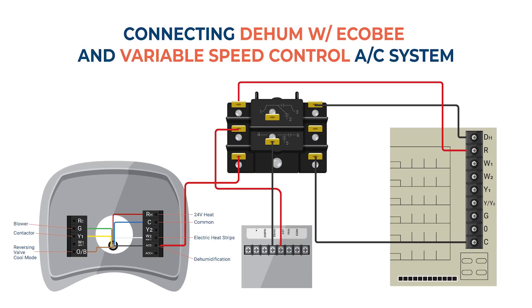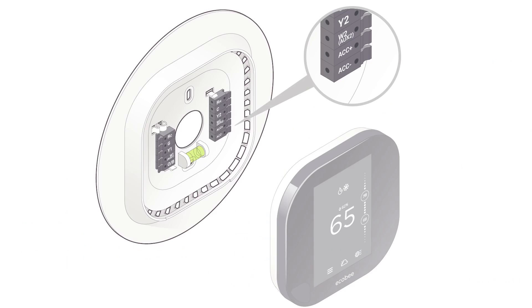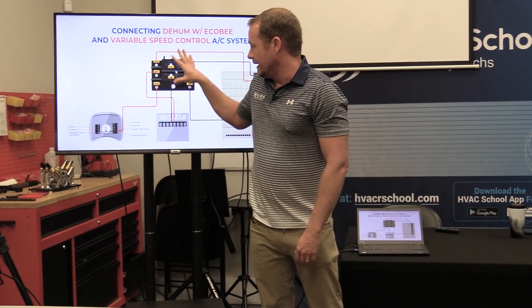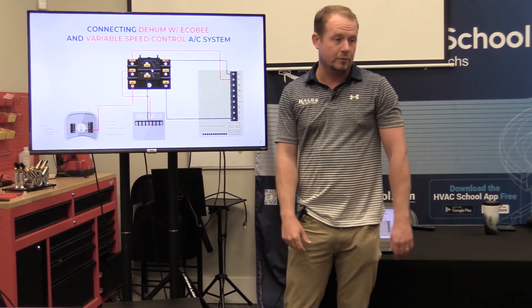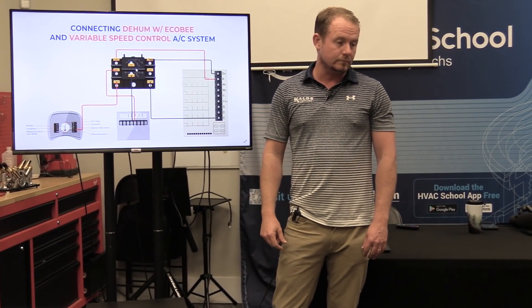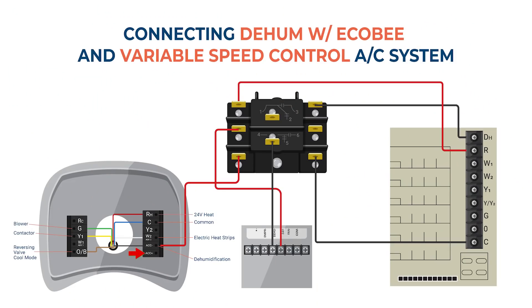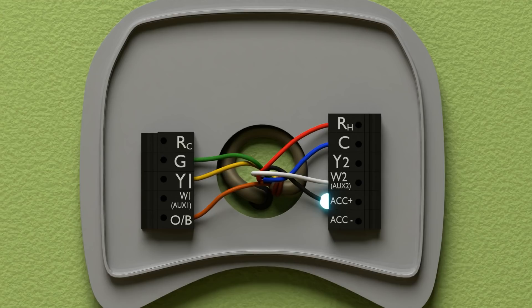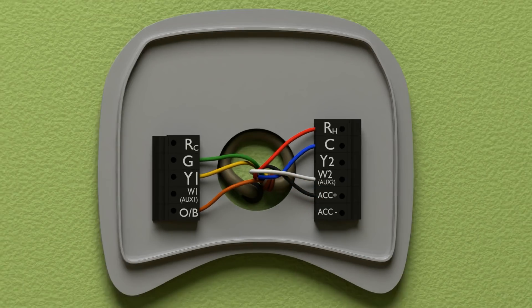We're going to talk a little bit about basic dehumidifier wiring. How we would normally do this. So we have a normal EcoB here. We have our ACC plus and our ACC minus. So how would we normally wire this up if we didn't have all this mess here? What would we do? We would do ACC plus to the dehumid. ACC plus straight to dehumid. And how does that work?